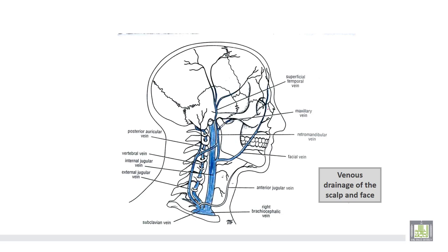In summary, the anterior facial vein unites with the anterior division of the retromandibular vein to form the common facial vein, which ends in the internal jugular vein. The posterior division unites with the posterior auricular vein to form the external jugular vein.